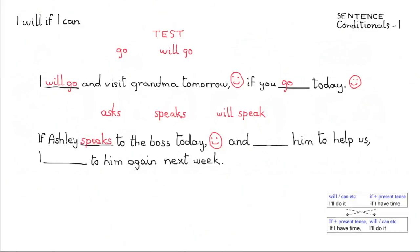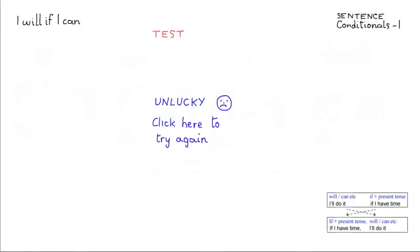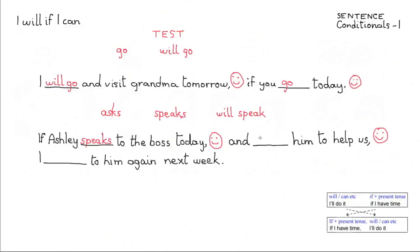Now look at the second one, and, him to help us, make a choice, select from the three possibilities. Whoops, sorry, no, that wasn't the right answer, click here to try again. Yes, well done, that's right, I'll just write it in, and asks him to help us.